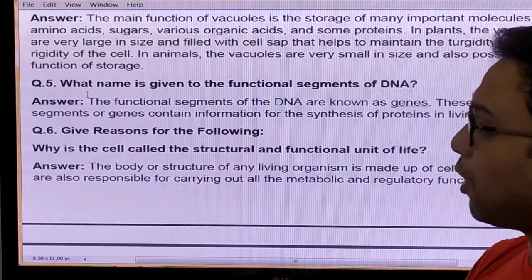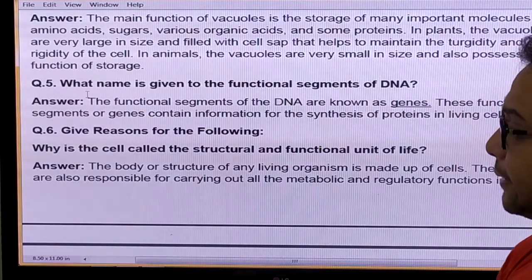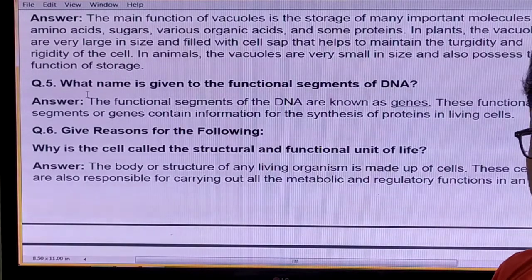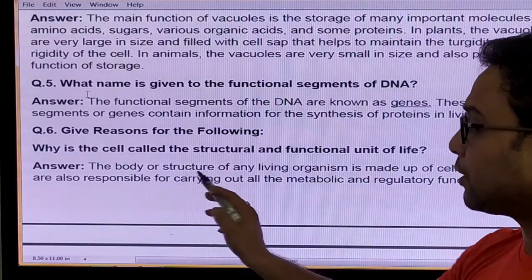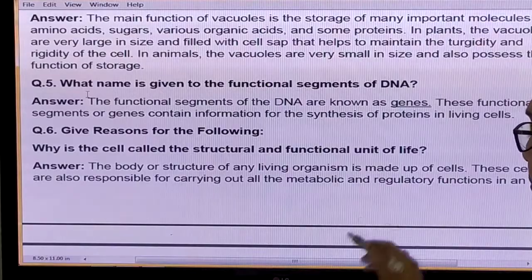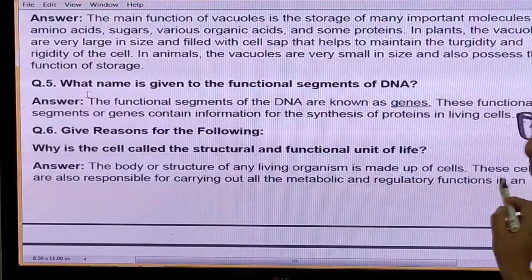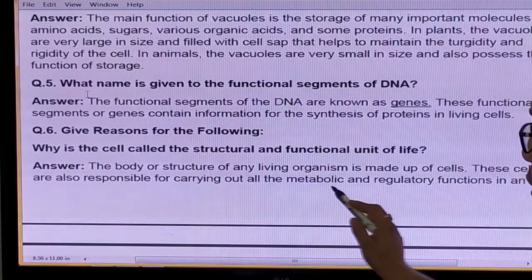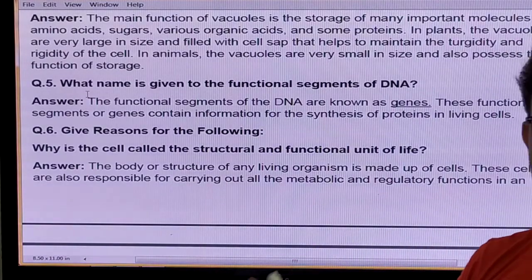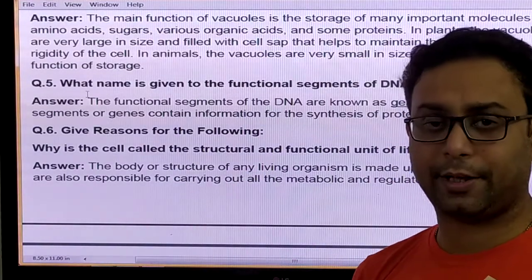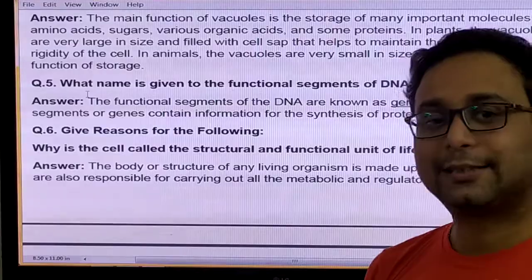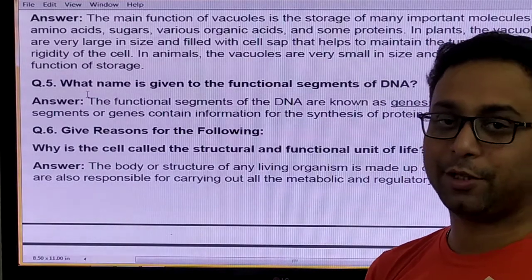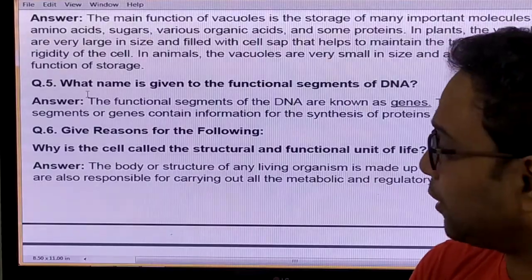Give reason for the following: Why is the cell called the structural and functional unit of life? Because the body or structure of any living organism is made up of cells, and these cells are responsible for carrying out all the metabolic and regulatory functions. So cells are called the structural and functional unit of life.